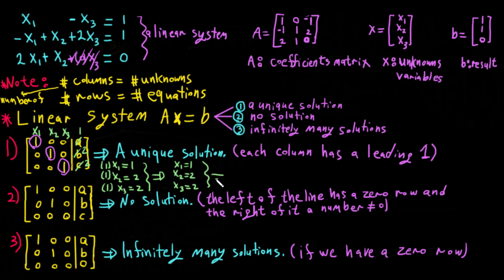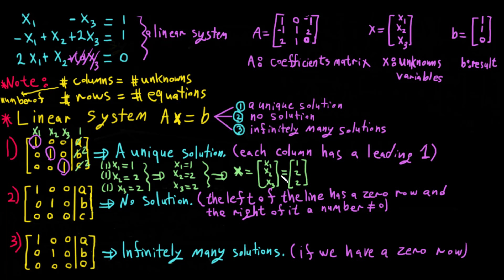From this we get x1 equals 1, x2 equals 2, x3 equals 2. So x equals the vector (1, 2, 2). That's why we have only one solution — a unique solution.